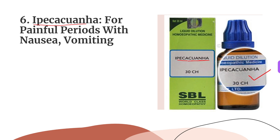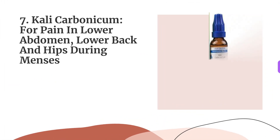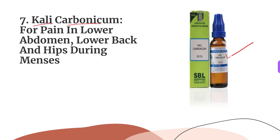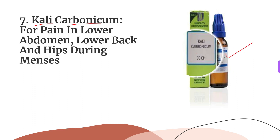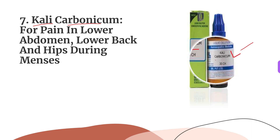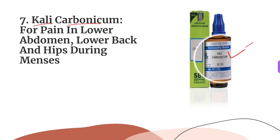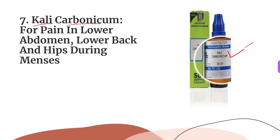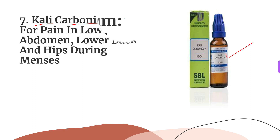The seventh medicine is Kali Carb, for pain in the lower abdomen, lower back, and hips during menses. It is prescribed for cutting pain in the lower abdomen, back, and hips; backache is more severe and worsens while walking. The patient gets relief from backache by sitting or by applying pressure on the back; weakness and sleepiness may also appear. It can be taken in 30 potency once or twice during menses.